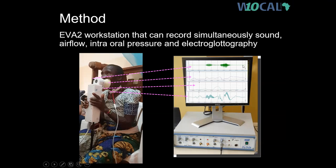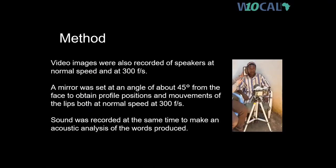The EVA2 display shows, in order, the audio waveform, the oral airflow, the intraoral pressure, and the EGG waveform, along with the position of one of the female speakers in our study, with the different parameters that were under study.